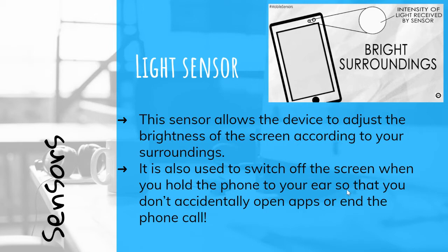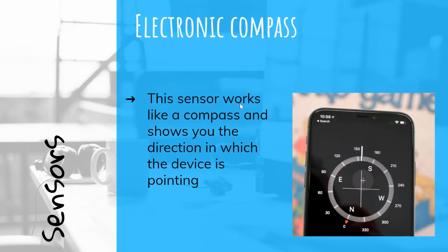The light sensor can also switch off the screen when you hold the phone to your ear, so you don't accidentally open apps or end the phone call. It will also automatically adjust the screen brightness according to your surroundings. Electronic compass: This sensor works like a compass and shows you the direction in which the device is pointing.